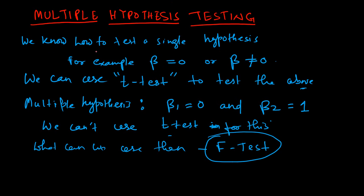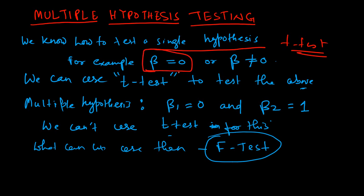We all know how to test a single hypothesis — that is the t-test. We have a null hypothesis, for example beta estimated from a regression equation. We test it for beta equal to 0, and the alternative hypothesis is beta is not equal to 0. We compute the t-statistic, the t-value, and then compare it with a threshold value from the table to decide whether to accept or reject the null hypothesis. That is the standard way of doing t-test hypothesis testing, but that is only for a single hypothesis.